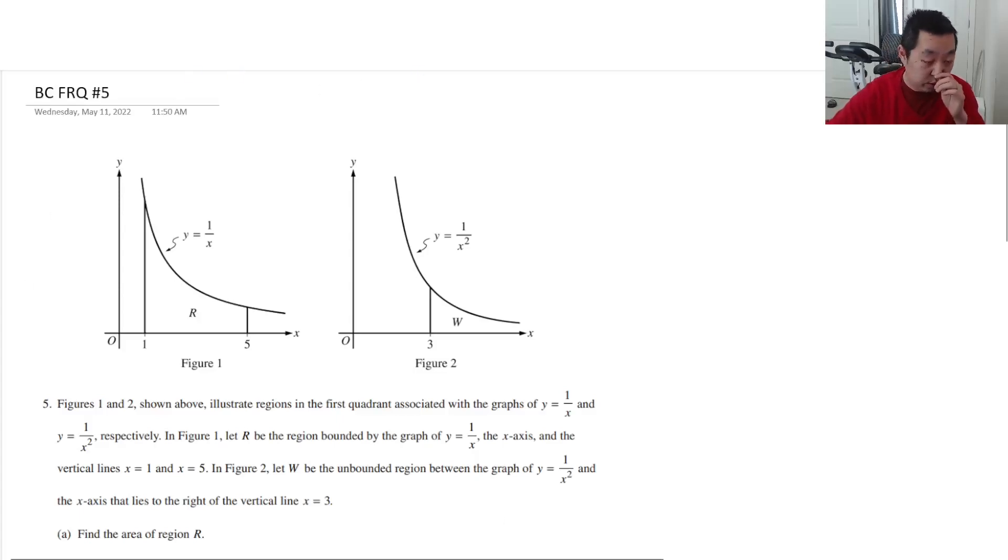Let's look at BC FR Question 5 from the 2022 exam. As usual, if I make a mistake, I'll put corrections in the description and in a pinned comment. Figures 1 and 2 illustrate regions of the first quadrant associated with the graphs y equals 1 over x and y equals 1 over x squared, respectively.